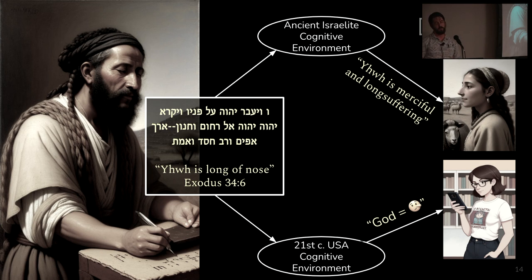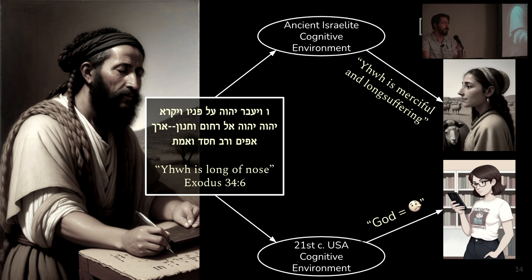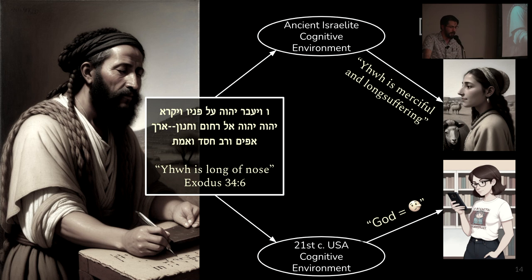An important tool is comparing literature from the same cognitive environment to reconstruct those assumptions. Here's an example — an idiom that comes full circle — Exodus 34:6, where Moses says God is 'long of nose,' which in Hebrew idiom means a person is long-suffering or merciful. It's a play on saying that someone angry gets a hot nose — if they're long of nose, it takes a long time for their nose to get hot, similar to how we say someone has a long fuse. But if you run that idiom through the 21st-century American context, you end up with God equals the Pinocchio emoji — clearly not what Moses is saying. This is an example where we can't just fill in those gaps with our own assumptions; we have to be aware of that.